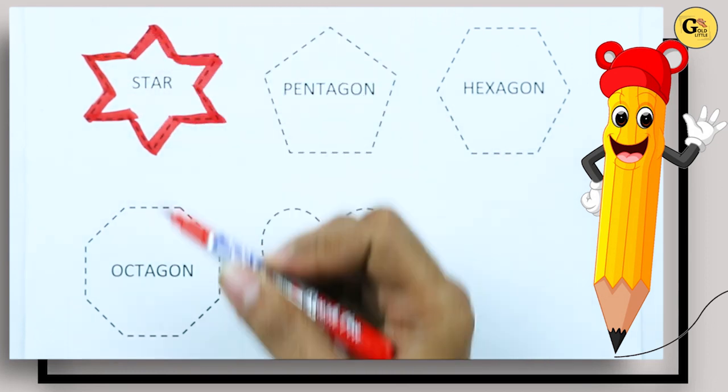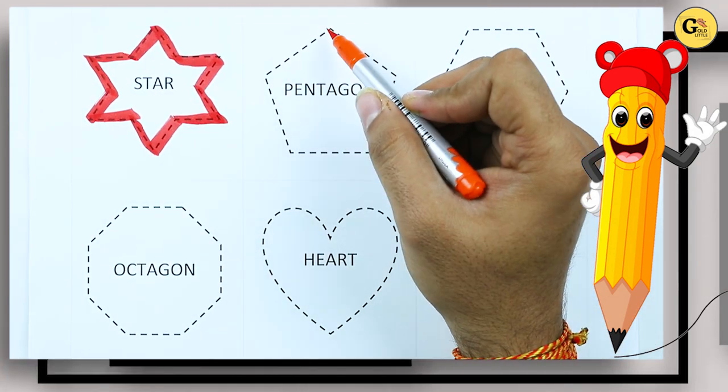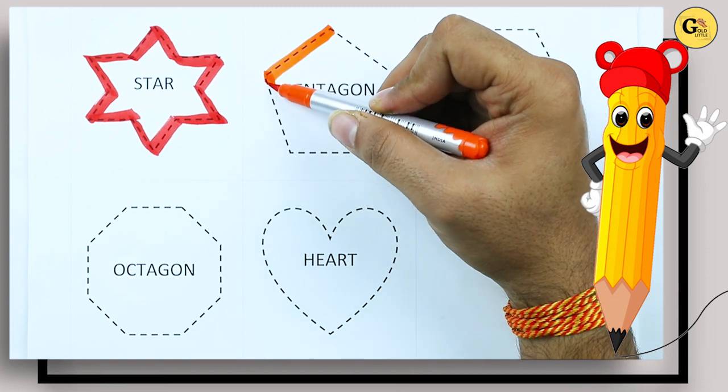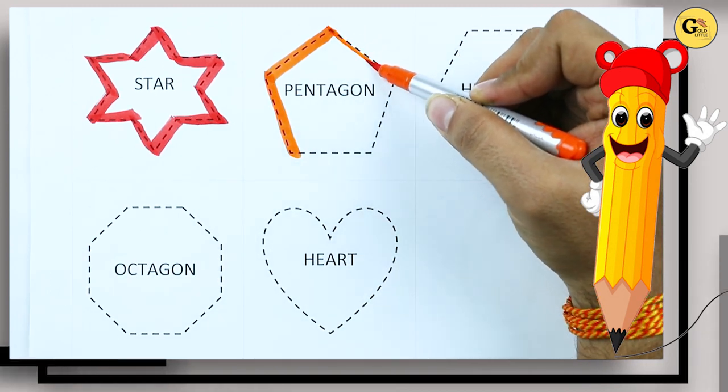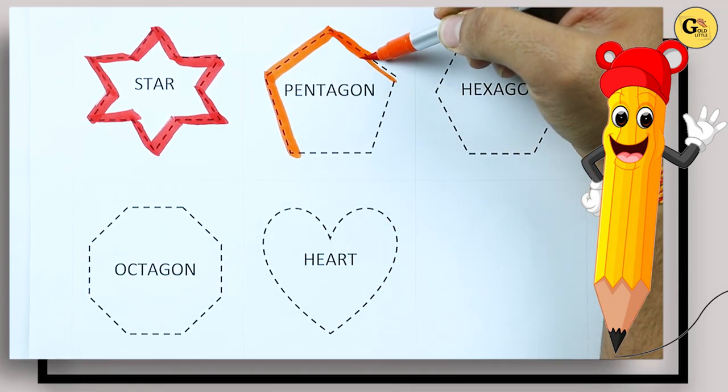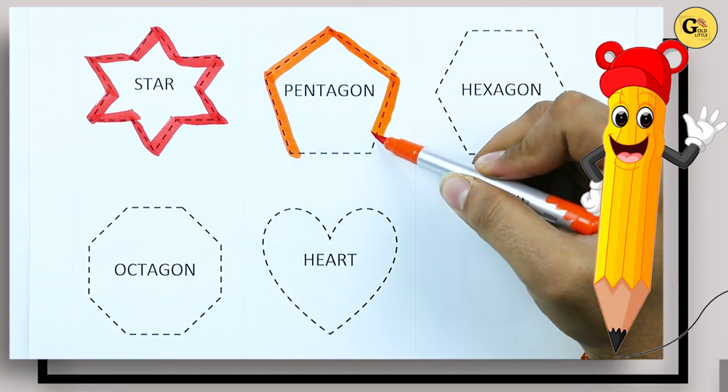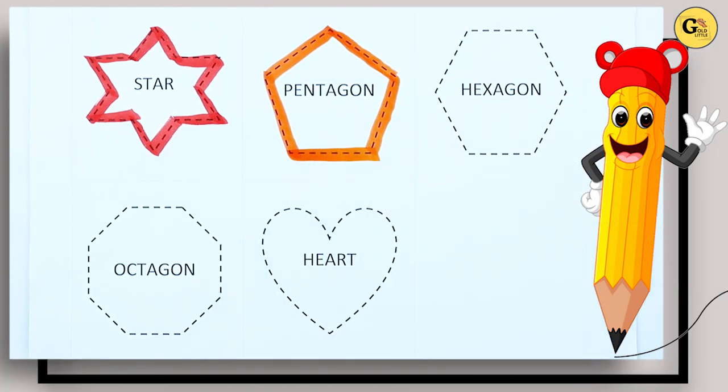Red color star. Pentagon: one line, two line, three line, four line, five line. It's a pentagon.